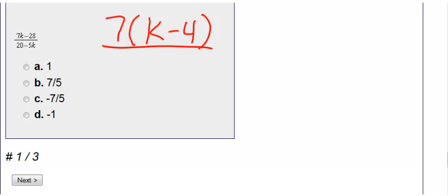In the bottom I have 20 minus 5k. So I ask myself what can I pull out. I can pull out a 5, therefore I'm left with 4 minus k.